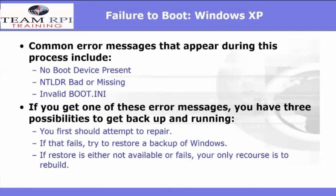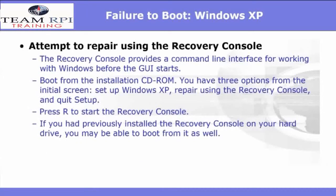If you get one of these error messages, you have three possibilities to get back up and running. First, try to attempt a repair. If that fails, try to restore a backup of Windows. If either one of those fail, your only recourse is to rebuild the system. To attempt a repair using the recovery console, you'll need your boot installation CD. You'll be prompted with three options at the initial screen: set up Windows XP, repair using recovery console, or quit setup. At this point, you're going to press R to start the recovery console.